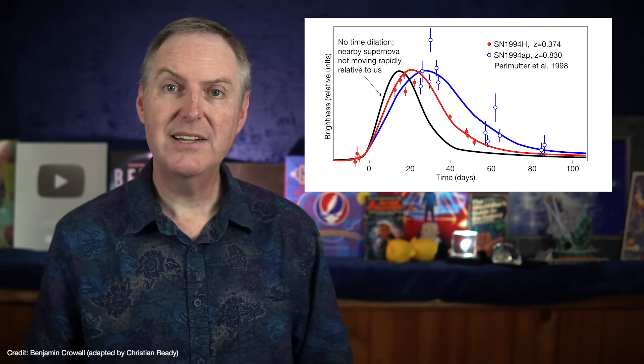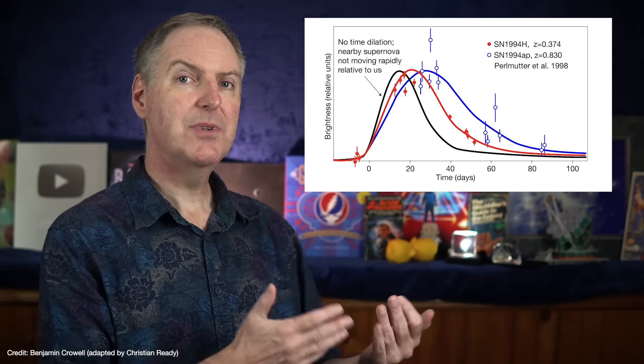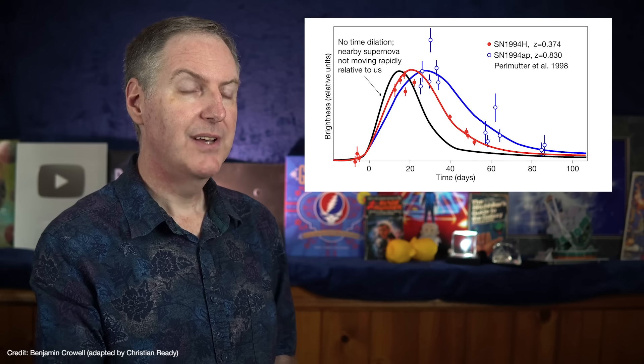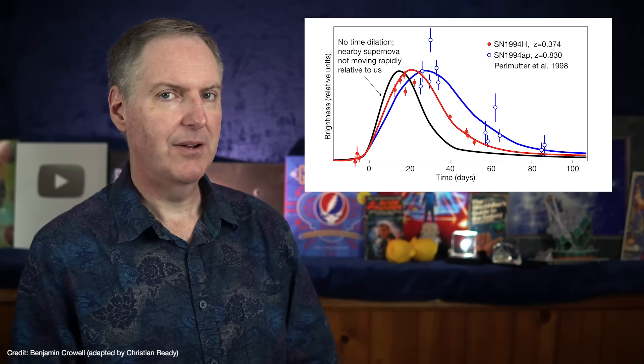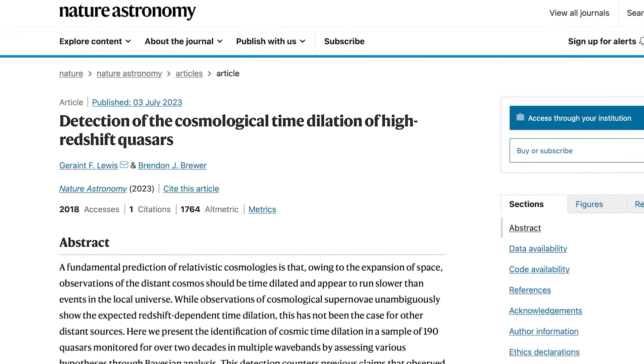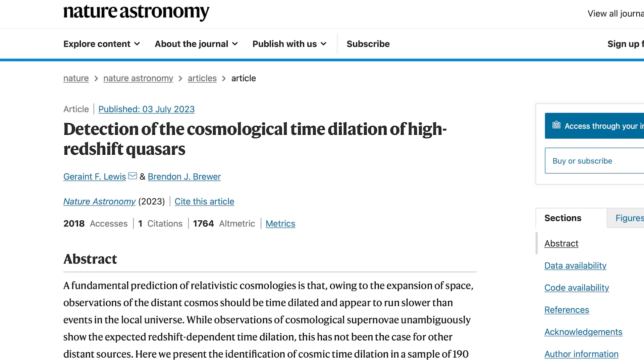On the other hand, in a static universe with tired light, distant supernovae would appear more red than their nearby counterparts, but they'd still take the same amount of time to fade. Cosmological time dilation was recently demonstrated with high redshift quasars that appear to vary their light output at slower rates as compared to quasars at lower redshift. In fact, astronomers who study quasars must apply corrections for cosmological time dilation, or else their measurements would be thrown off.